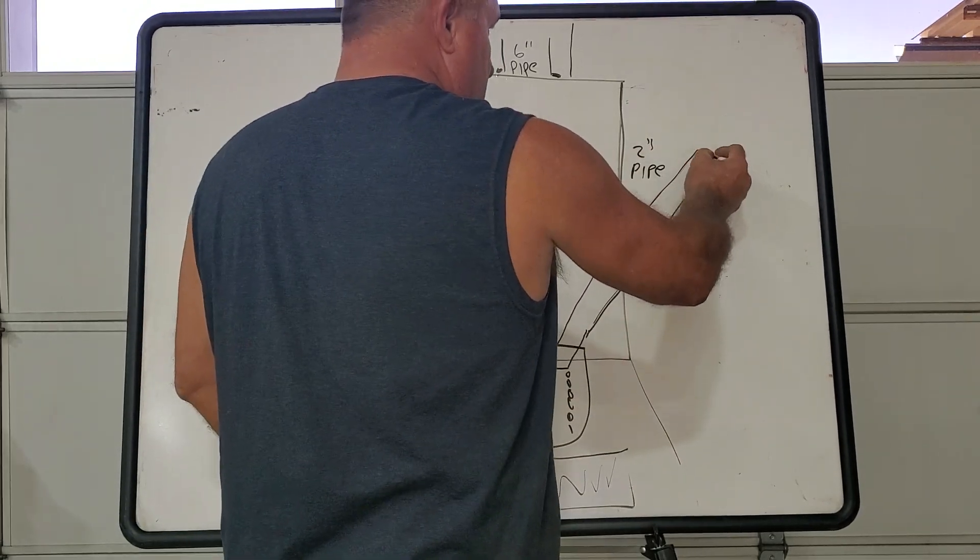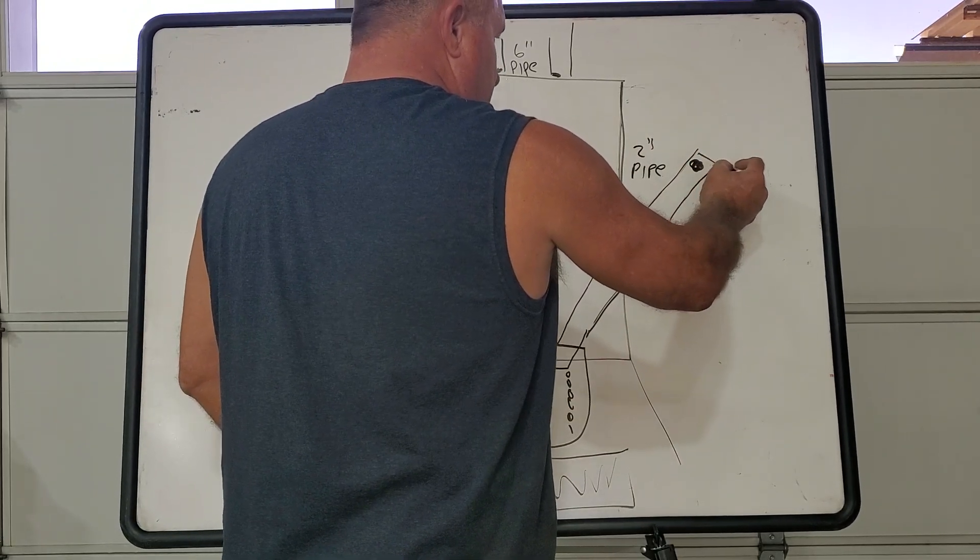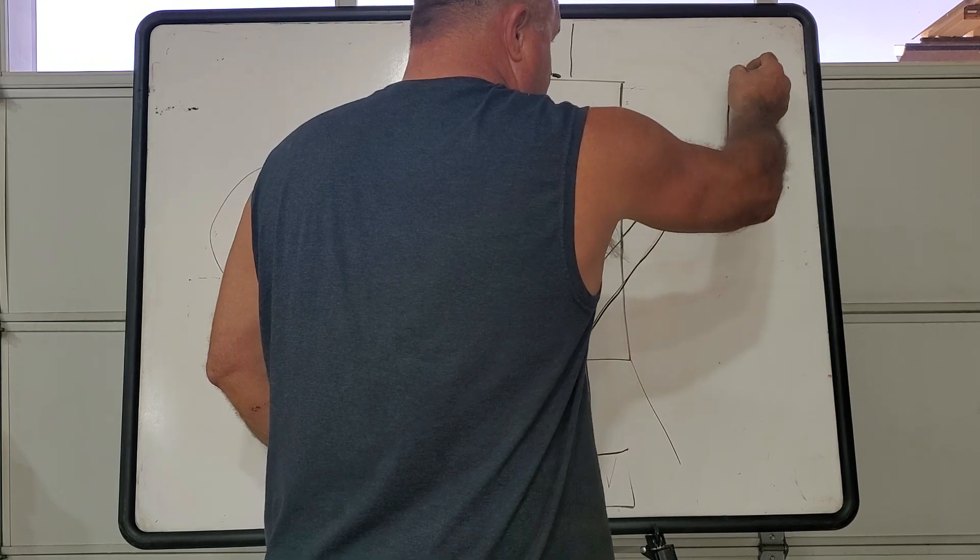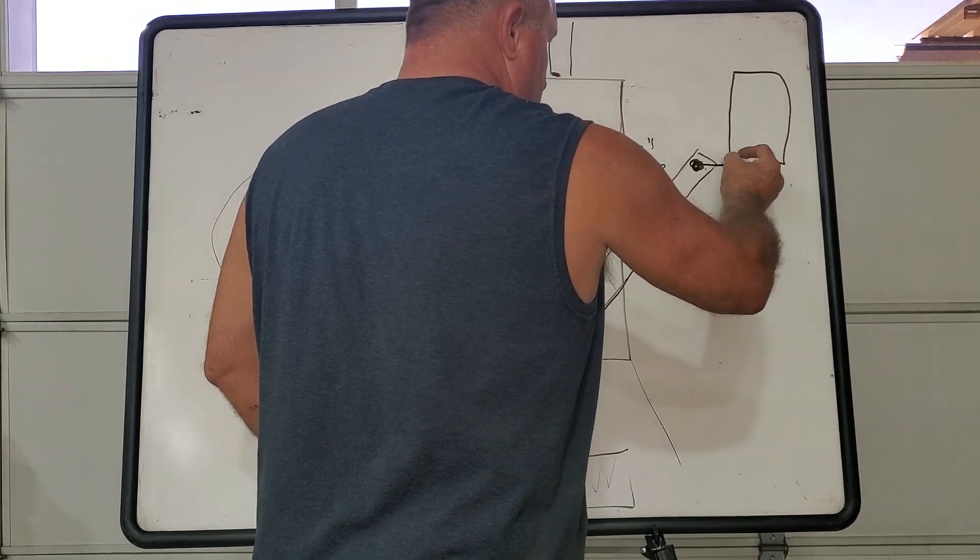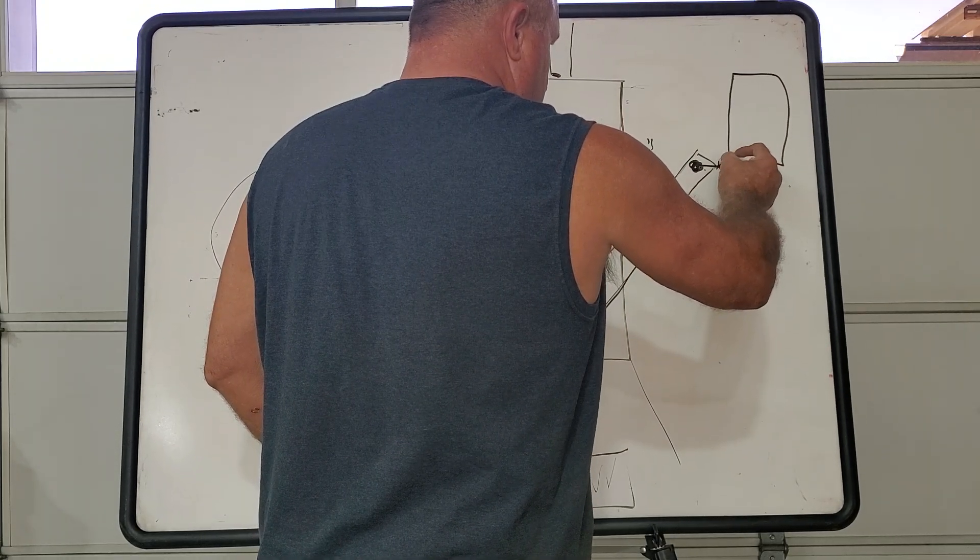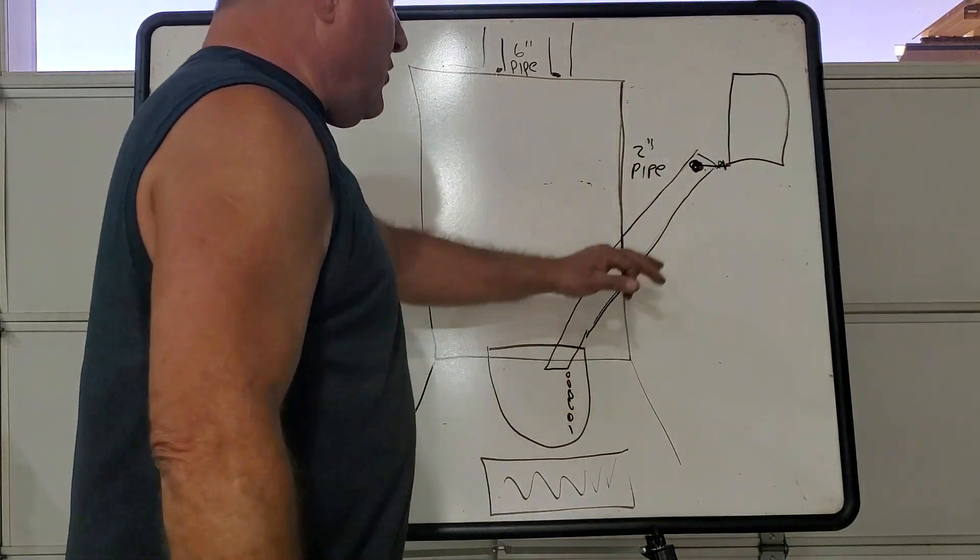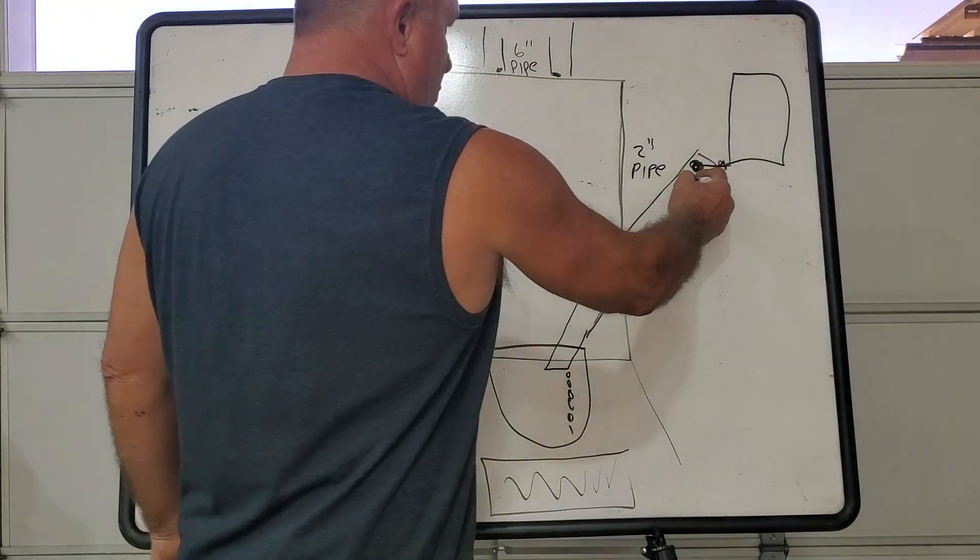This is where the oil goes. You're gonna put an outlet right in here and run it out to your tanks, and you're gonna have a valve right here to control the oil going down, so the oil drips down this tube.